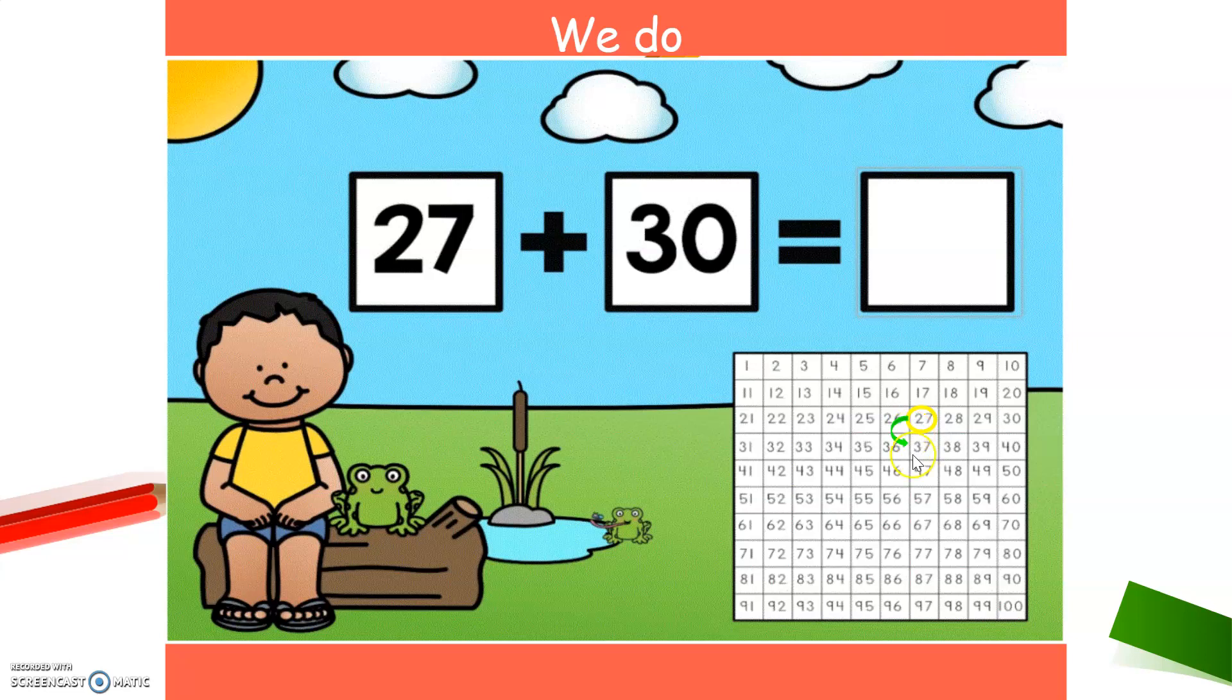Let's see. I'm gonna do one jump, two jumps, three jumps. That's three groups of 10. And I got to 57. Did you get to 57 too? Good job if you did. So 27 plus 30 is 57. Awesome. Do you want to do another one?